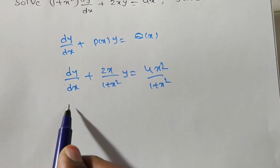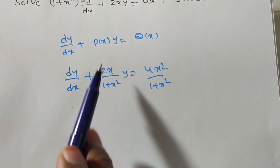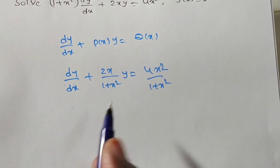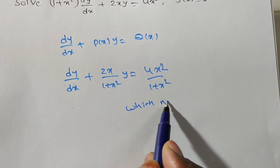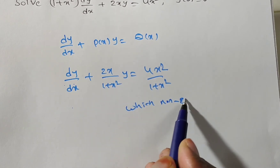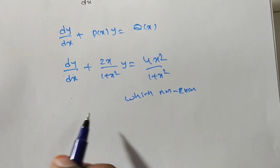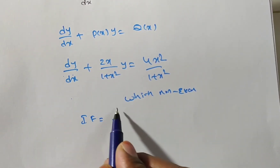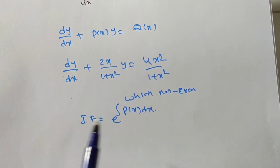Now we can compare this with dy/dx + P(x)·y = Q(x), which is a non-exact differential equation. To make it exact we multiply by the integrating factor, which is e to the power of the integral of P(x) dx.